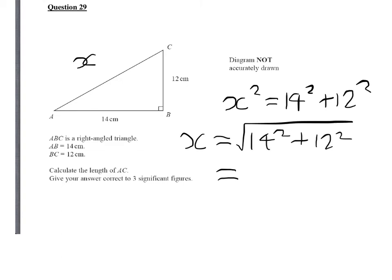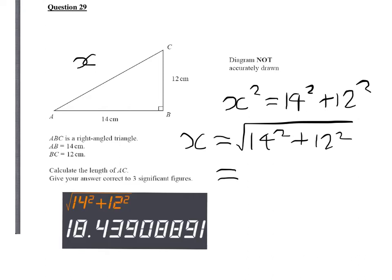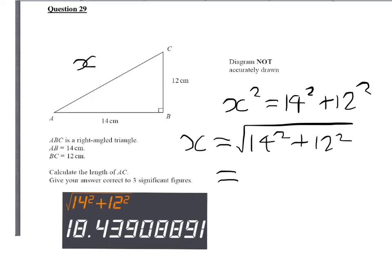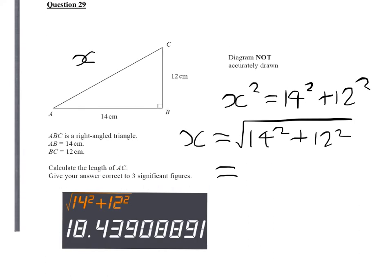We'll do that on the calculator now. The answer to three significant figures will be 18.4. Look at the fourth significant figure, which is 3 — that doesn't round you up, so it leaves you at 18.4 centimetres.